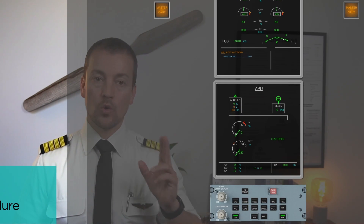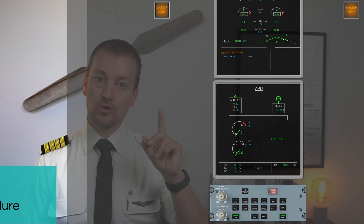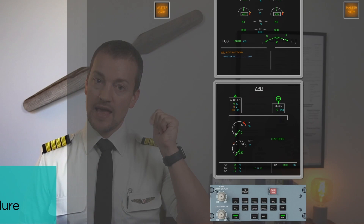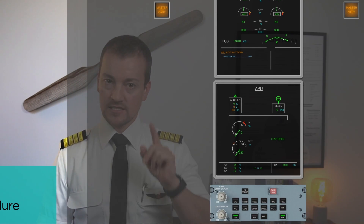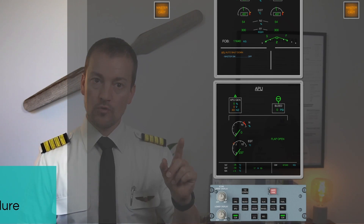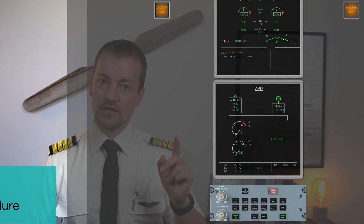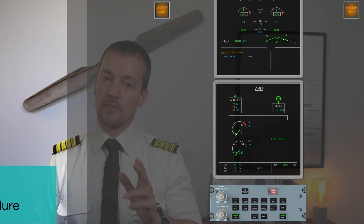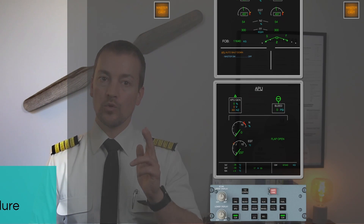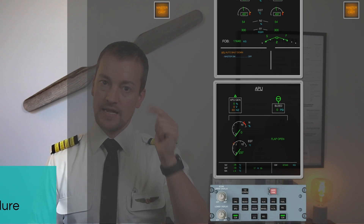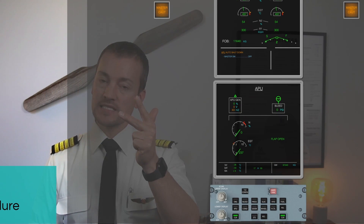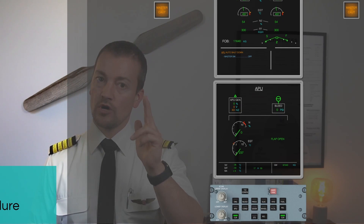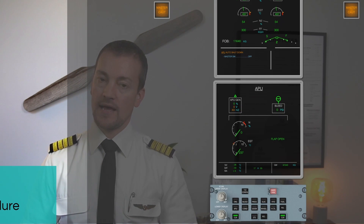The pilot flying will remember the first golden rule: fly, navigate, communicate, and apply these three actions in that order with appropriate sequencing to ensure the safe outcome of the situation. For any type of failure, the pilot flying will do so — fly, navigate, communicate. Apply this as the pilot flying before you announce ECAM actions.